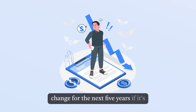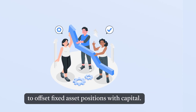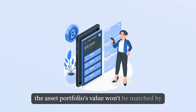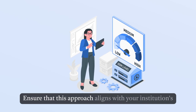Step 7: Be cautious when using reserve spreading assumptions to offset fixed asset positions with capital. In situations like SVB's collapse, a decrease in the asset portfolio's value won't be matched by an increase in equities value. As a result, reserve spreading assumptions may not hedge the underlying interest rate risk effectively. Ensure that this approach aligns with your institution's risk appetite.